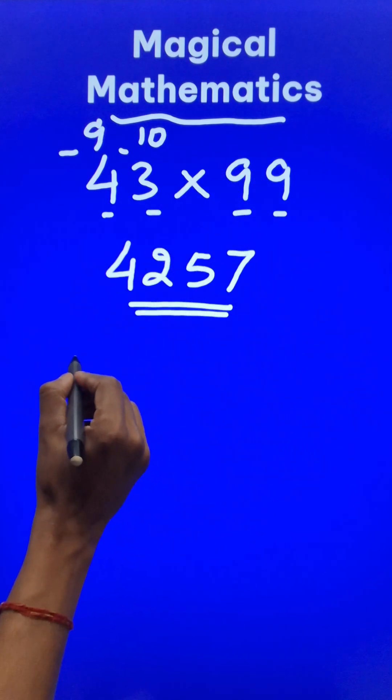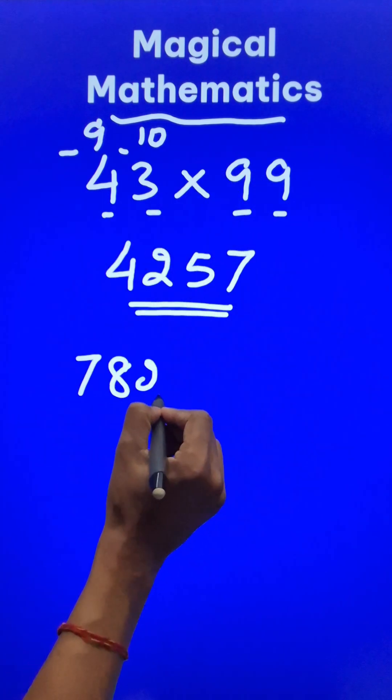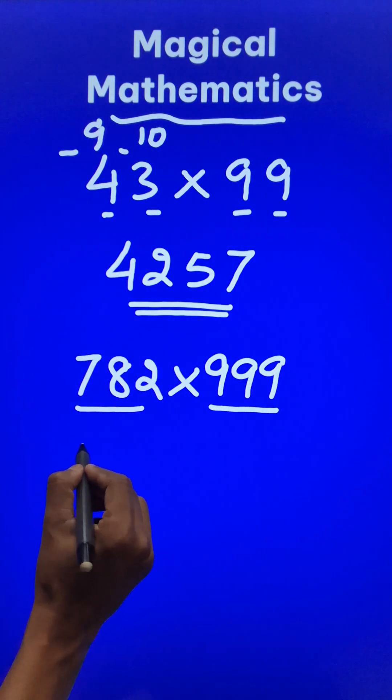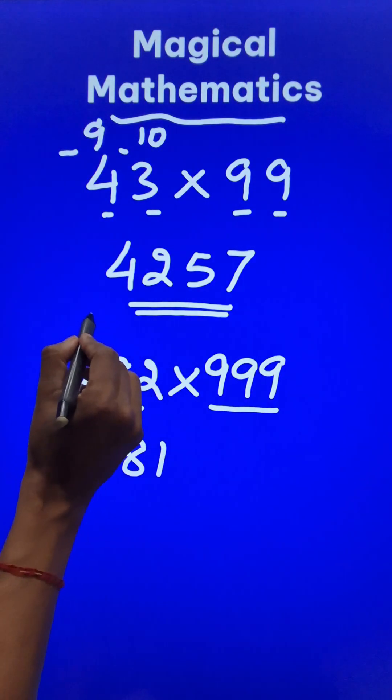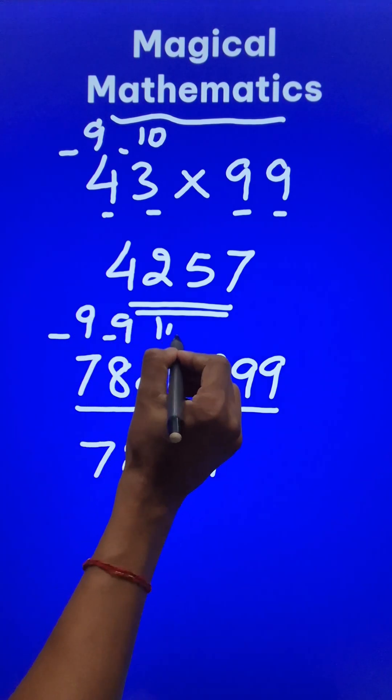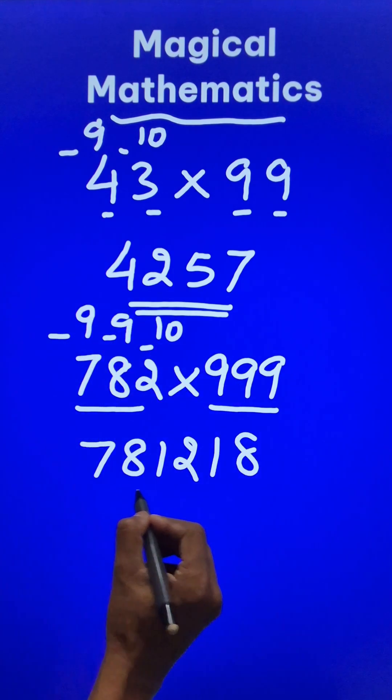if you have 3-digit numbers like 782 multiplied by three 9s—so 3 digits and 3 nines. Reduce this by 1: 7, 8, 1. Then 9 minus 7 is 2, 9 minus 8 is 1, and 10 minus 2 is 8, which is your product.